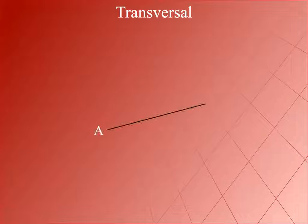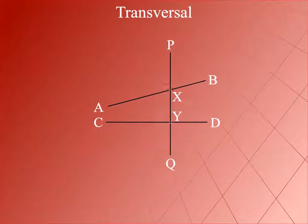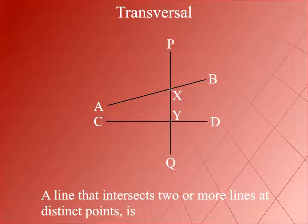Transversal: AB and CD are two lines in the same plane. PQ intersects AB at X and CD at Y. Here, the line PQ is called a transversal to the lines AB and CD. A line that intersects two or more lines at distinct points is called a transversal.